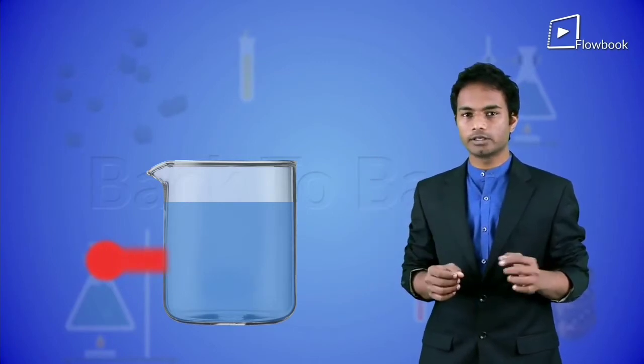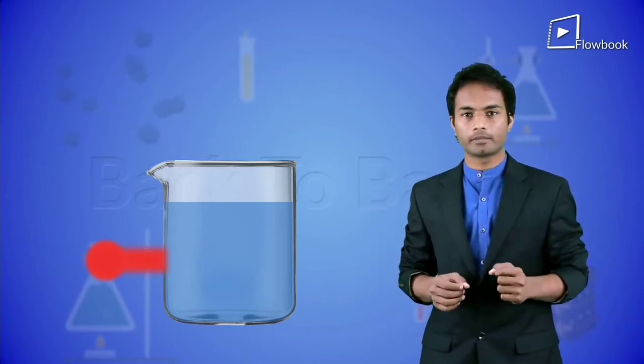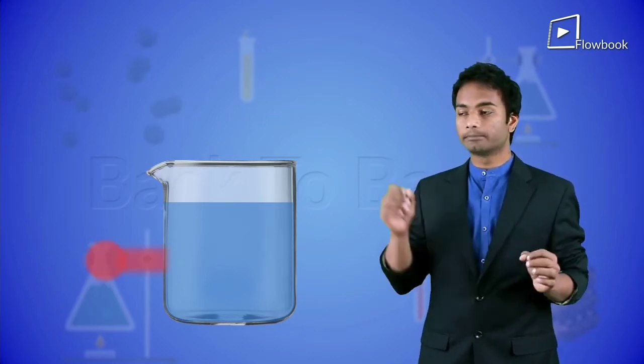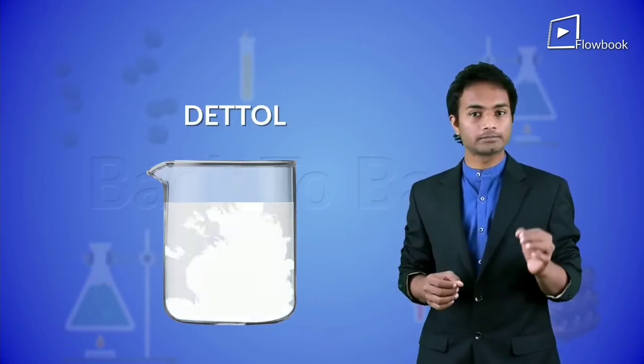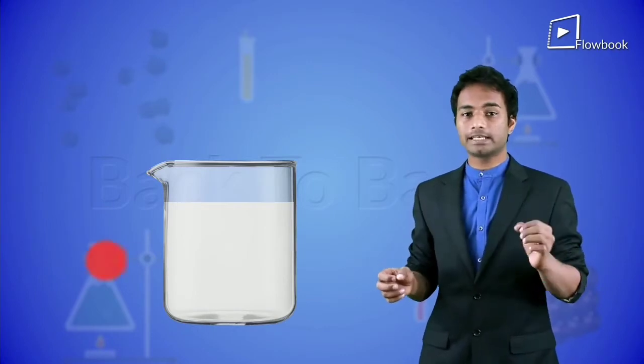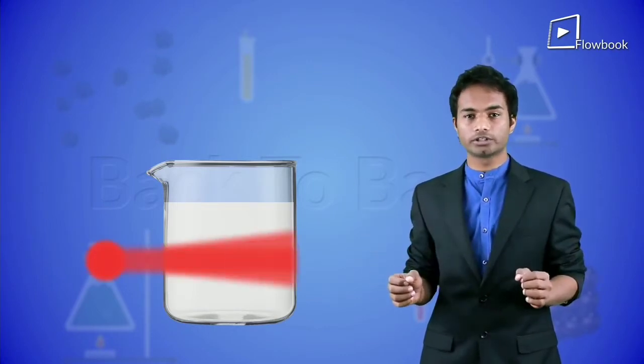Now if I pass a laser light through one end of the solution, you cannot see the path of the light. But if I put some Dettol in it, now it becomes a colloidal solution. This time if I pass light through this colloidal solution, the light path can be observed.